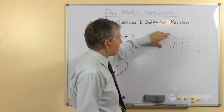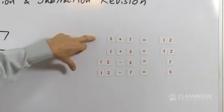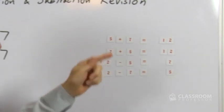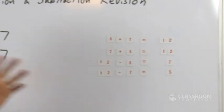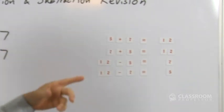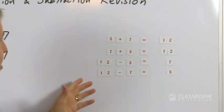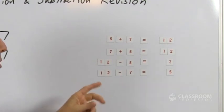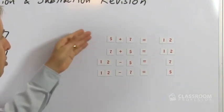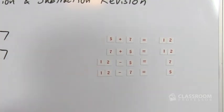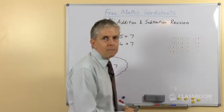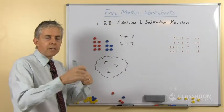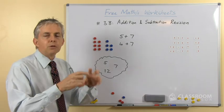I'll zoom in on this part — these are just some magnetic numbers, but I think it quite nicely shows that you're reusing the same symbols. In fact, I tried to do the 4 plus 7 and I ran out of ones because my kit didn't have enough of them. But if you had a resource like that with numerals printed on them, you can ask the students to rearrange them.